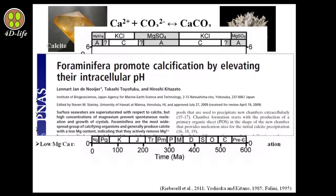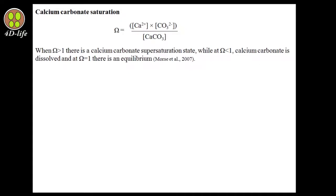Now we want to talk about calcium carbonate saturation rate. Calcium carbonate saturation is a measure of the thermodynamic potential of seawater to form or dissolve calcium carbonate. It is calculated by the following equilibrium. In simple terms, the calcium carbonate saturation rate is a balance between calcium carbonate ions on one side, and calcium ions and carbonate ions separately on the other.